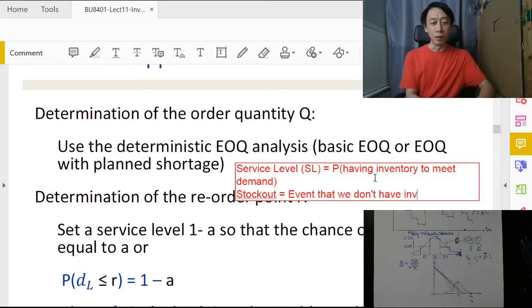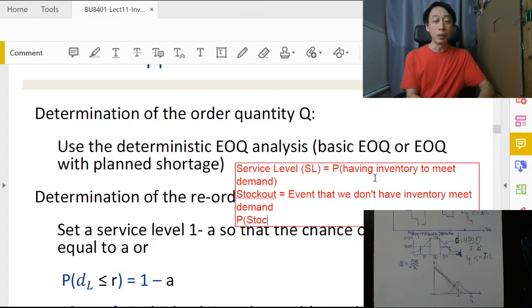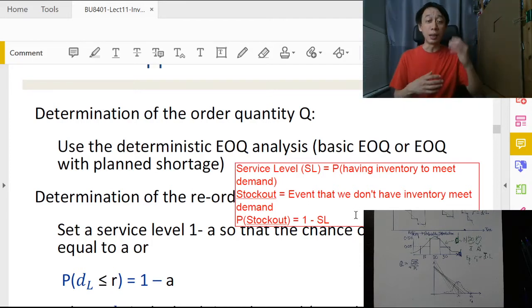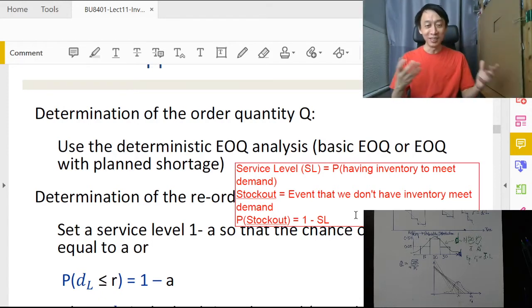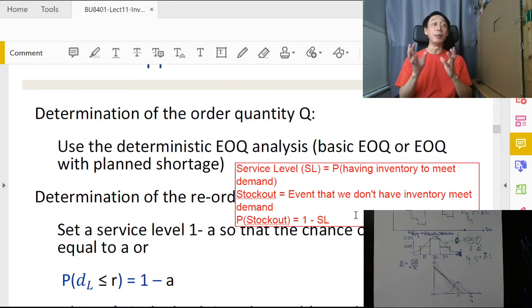The probability of stock-out is basically equal to 1 minus service level, because service level is having things to sell and not having things to sell to meet the demand—they're complementary, so the probabilities are also complementary. Service level is a number between 0 to 1, so 0% to 100%.